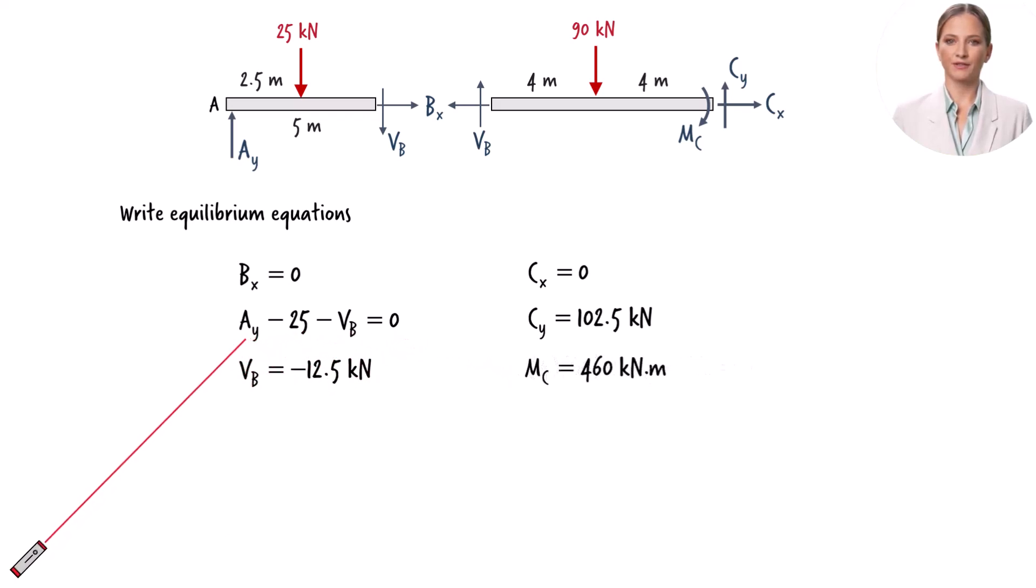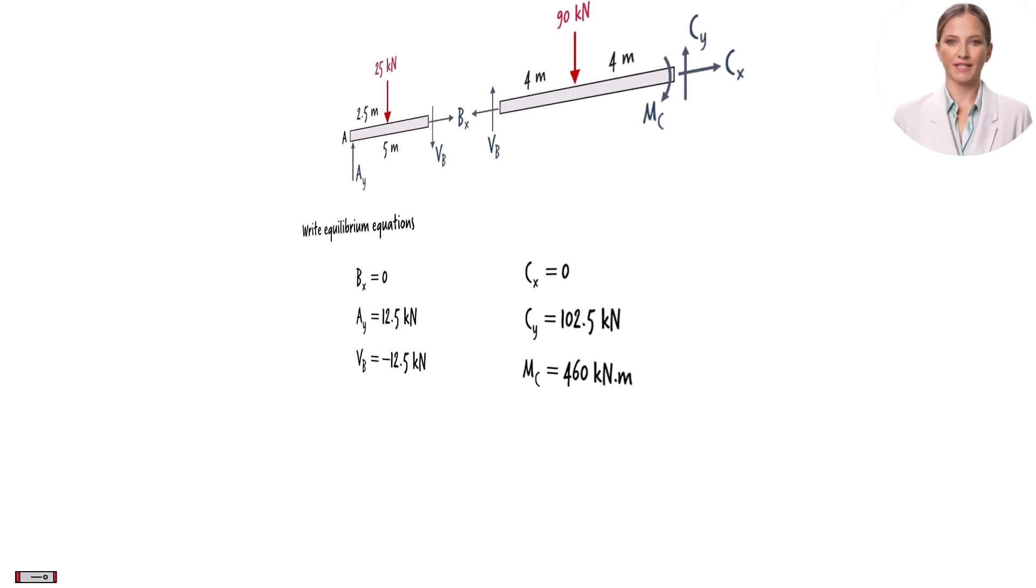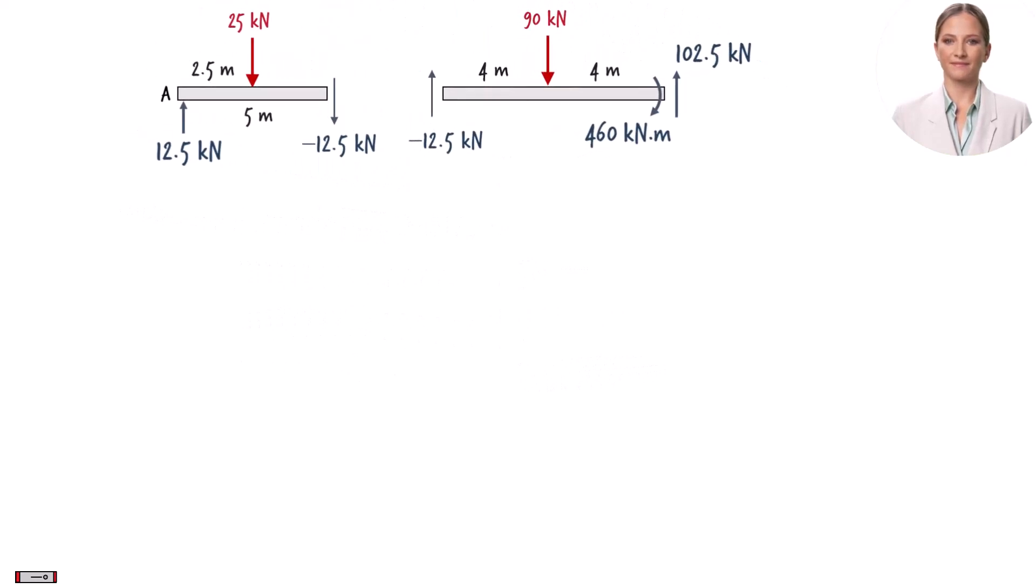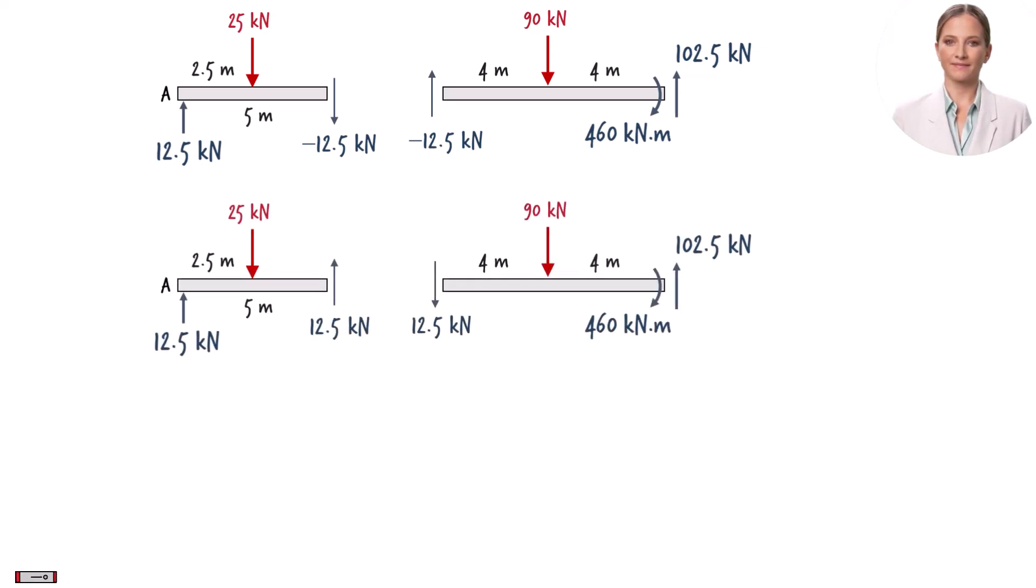Finally, we can use this equation to determine A sub y. Let's show the calculated forces on the free body diagram. Since the shear force at point B was calculated to have a negative magnitude, we can reverse its direction and set its magnitude to positive 12.5 kN, like this. To summarize, here are the beam's support reactions.